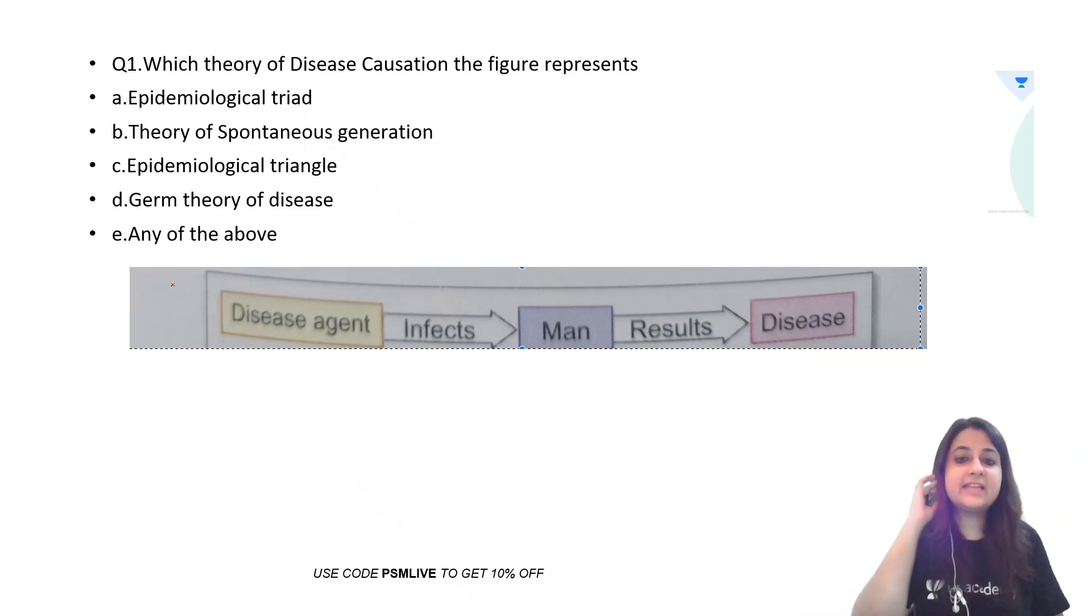So let us look at the images for the day. Which theory of disease causation does the figure represent? So what do you think this is? Disease agent infects man results in disease. Is it triad, spontaneous generation, triangle, germ theory, or any of the above? This one over here, everybody, is germ theory.